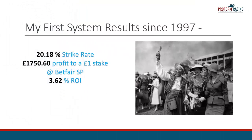In another video, I discussed the theory behind how to develop systems, but shown on the screen are the results of the system we shall use today. The system covers all race types — i.e. all-weather, turf, and national hunt — and the results shown are from 1997 to the present day.